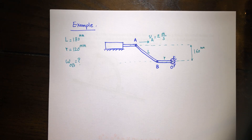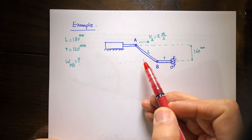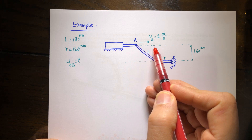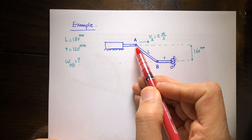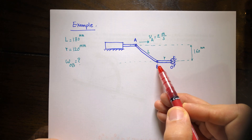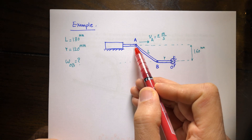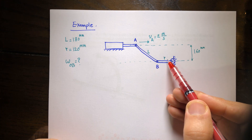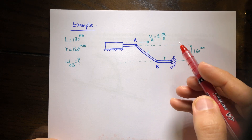Let's do another example together. Here we have a mechanism with three or four parts. The first one is a hydraulic cylinder. Point A is moving to the right with a constant velocity of two meters per second. A-B is pinned to the piston at point A, and from the other side it is pinned to another bar at point B, and this bar is pinned to the ground at point O. Whenever A moves to the right, A-B is going to move and rotate, and B is going to move, so this bar is going to rotate as well.